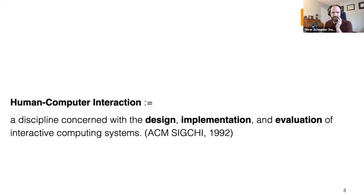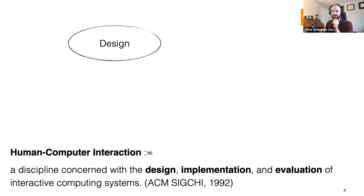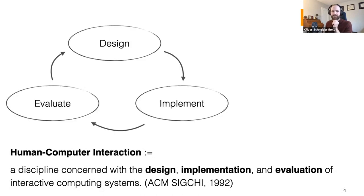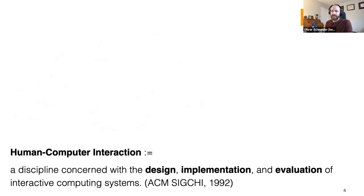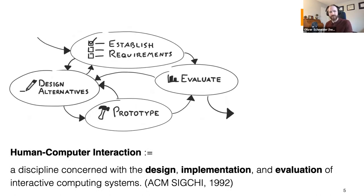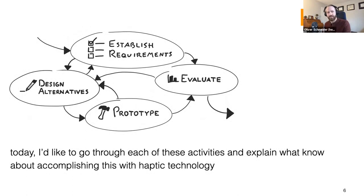I want to start by showing this definition of human-computer interaction. This was one definition by ACM SIGCHI from 1992, which defines it as a discipline concerned with the design, implementation, and evaluation of interactive computing systems. You see there's three different activities: design, implement, evaluate. These form an iterative cycle — you design some ideas, you try them out, you evaluate them with the people who might use your system, and then you do this over and over again to arrive at the right solution.